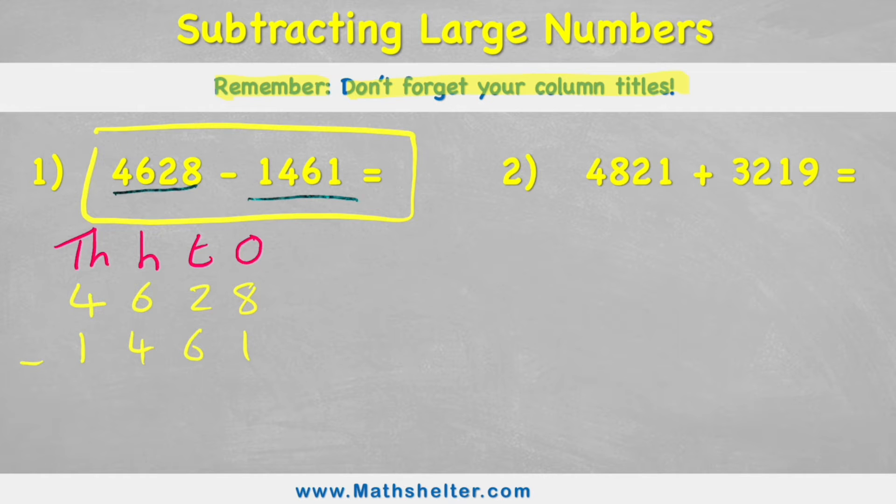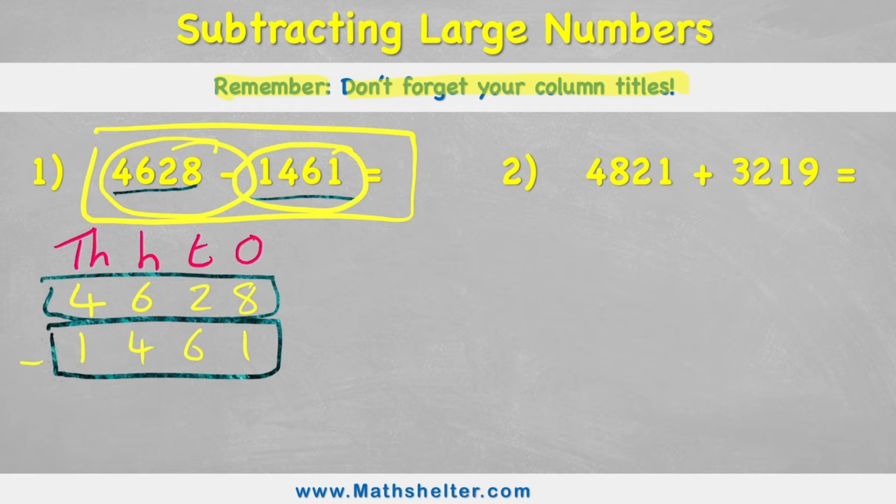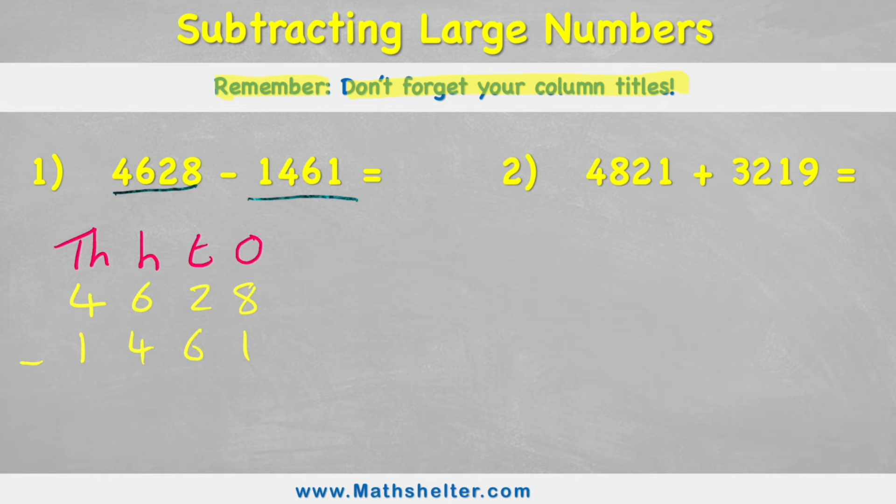Now something very important about subtraction is that subtraction is what's called not commutative. It's really important which way around we do the question. If it says 4,628 subtract 1,461, we need to write it as 4,628 subtract 1,461. If I put it the wrong way around, I'm going to get a totally different answer, and that's going to become very important in a minute as well.